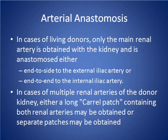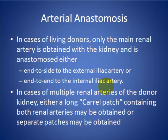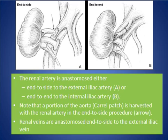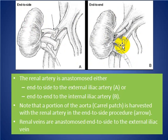In cases of living donors, only the renal artery is obtained with the kidney, and it is anastomosed either end-to-side to the external iliac artery or end-to-end to the internal iliac artery. As seen in this image, this is the end-to-side anastomosis and this is the end-to-end anastomosis.